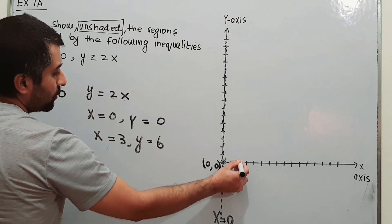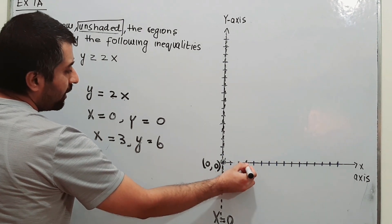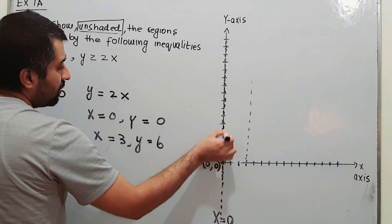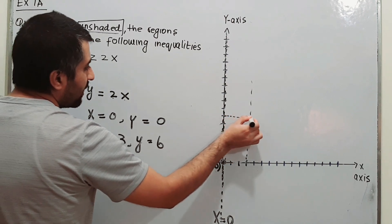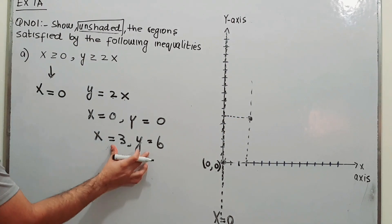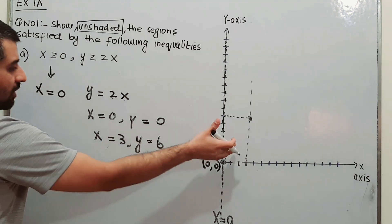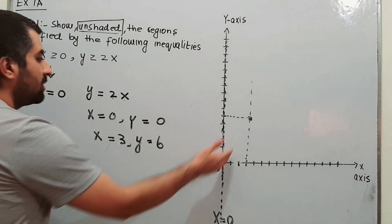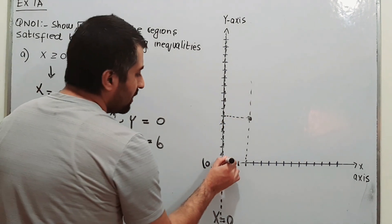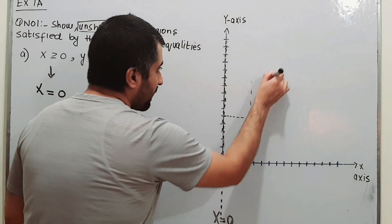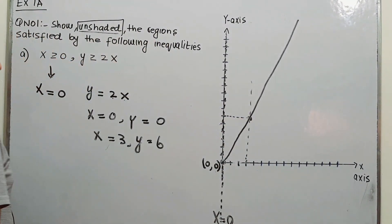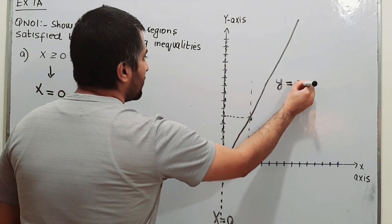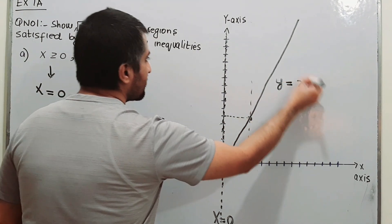Plotting these two points on the graph — the origin where x is 0 and y is 0, and the point where x is 3 and y is 6. Now join these two points using a straight line. This line represents y equal to 2x on the graph.